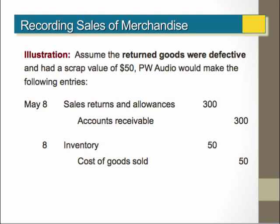Assuming the returned goods were defective and had a scrap value of $50, we would debit sales returns and allowances for $300 and credit accounts receivable for $300, but we would only recognize the inventory returned at scrap value — debit inventory $50, credit cost of goods sold $50. The difference of $90 would continue to be expensed in cost of goods sold.